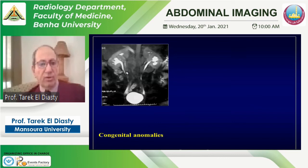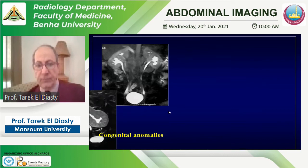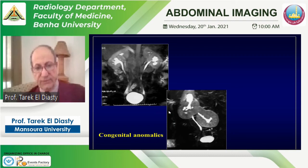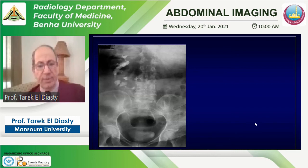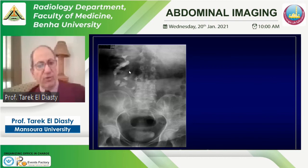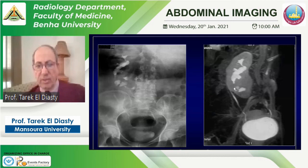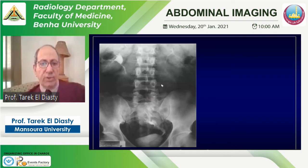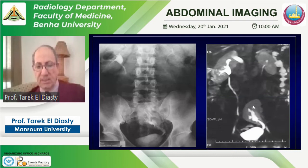For congenital anomalies, MR urography can evaluate bilateral duplex systems, renal fusion, and ectopic kidneys, all of which require long-term follow-up. In a patient with crossed ectopic left kidney on IVU, the left ureter is in the normal position. Excretory MR urography confirms the crossed renal ectopia and makes the fusion appear more clearly. Another case shows a supernumerary kidney in the pelvis alongside both normal kidneys, with the same information confirmed on excretory MR urography.